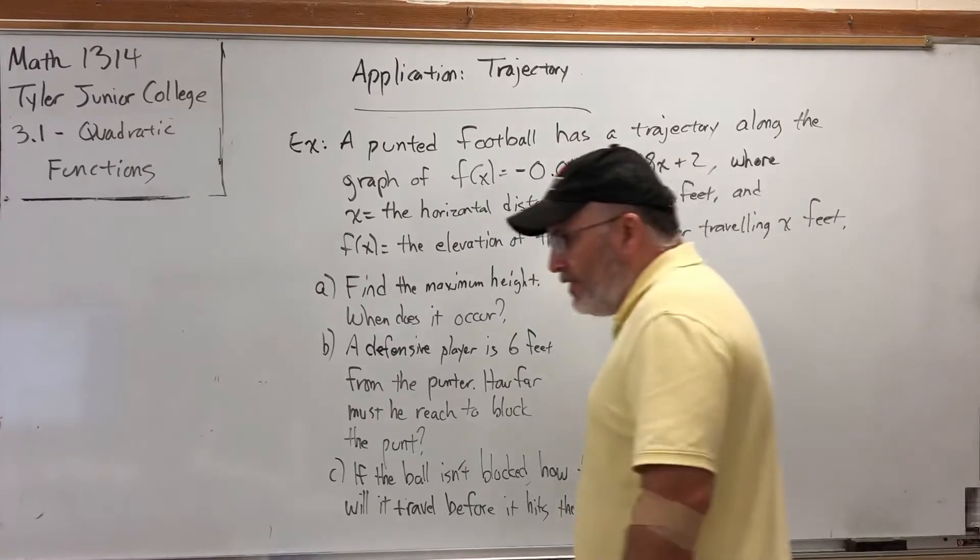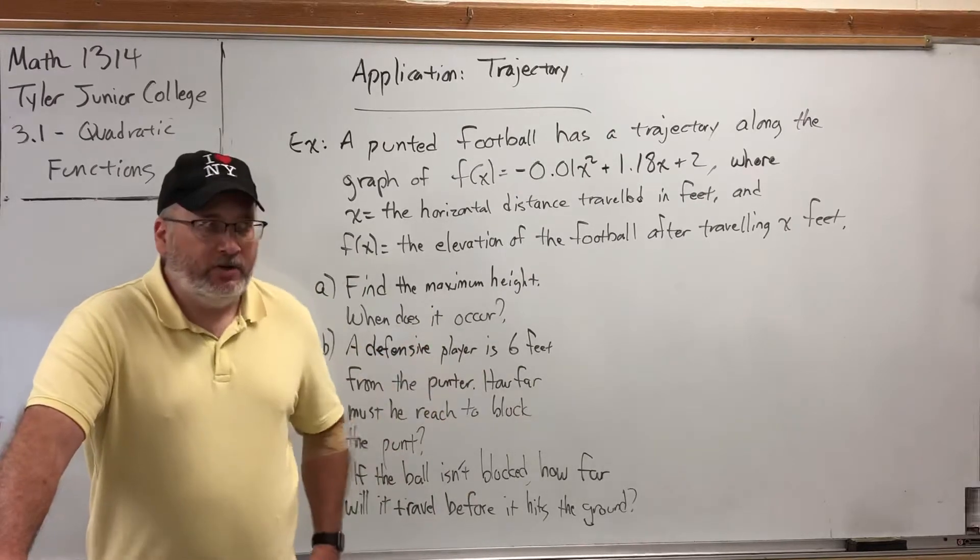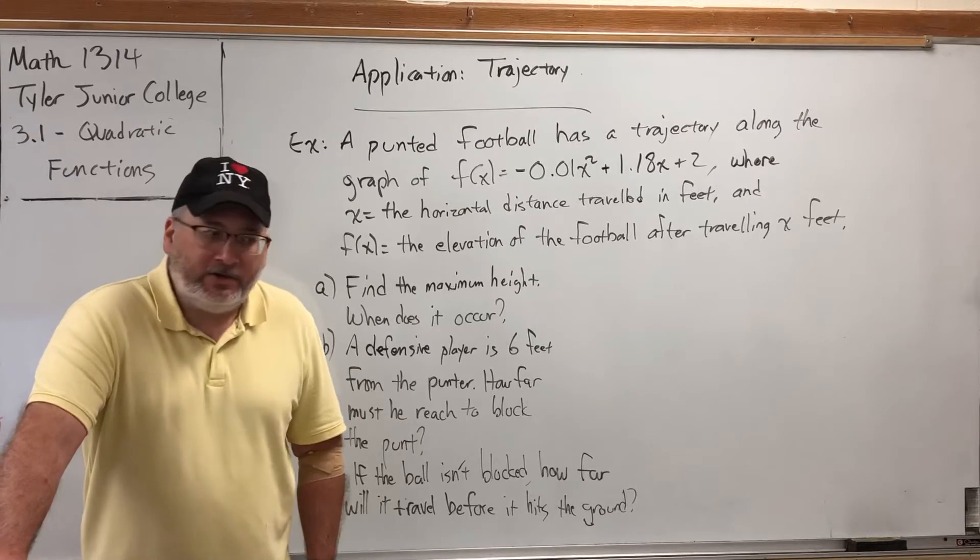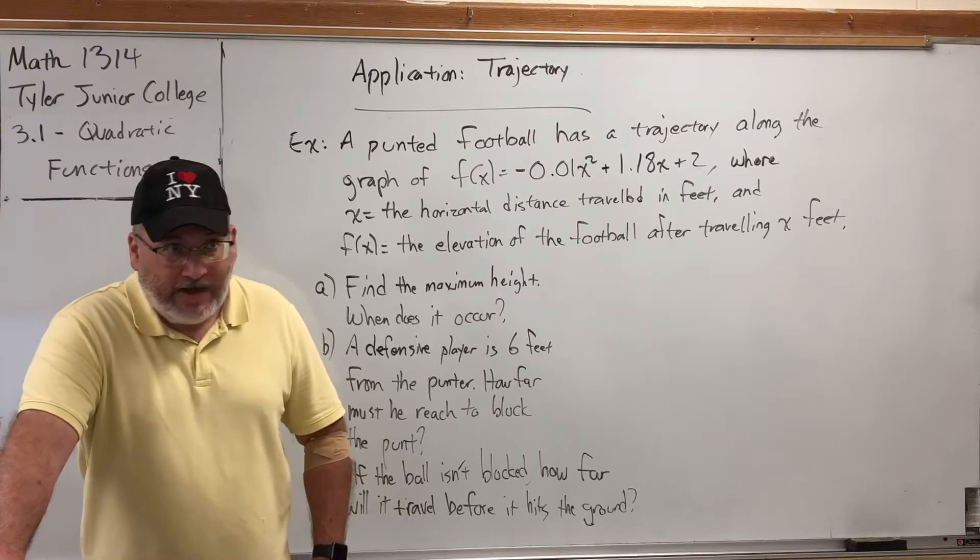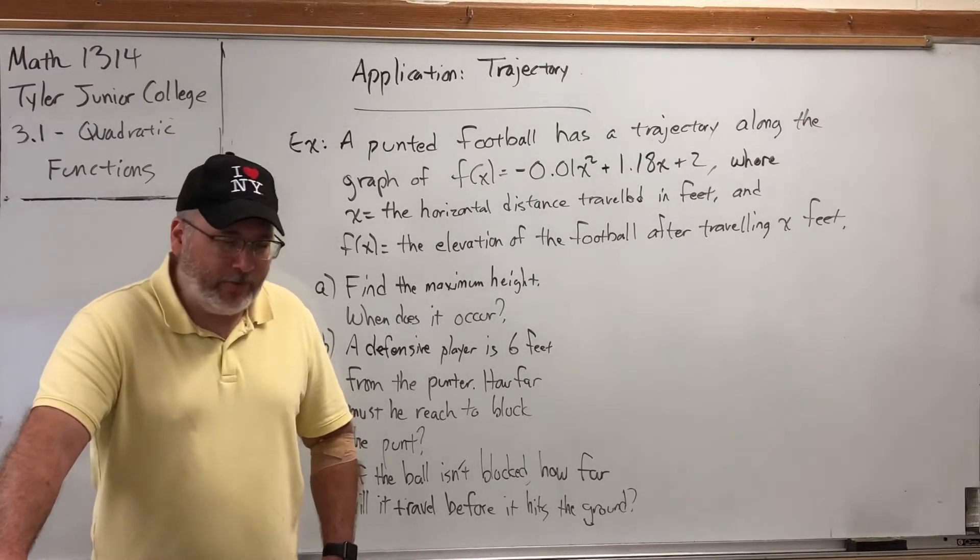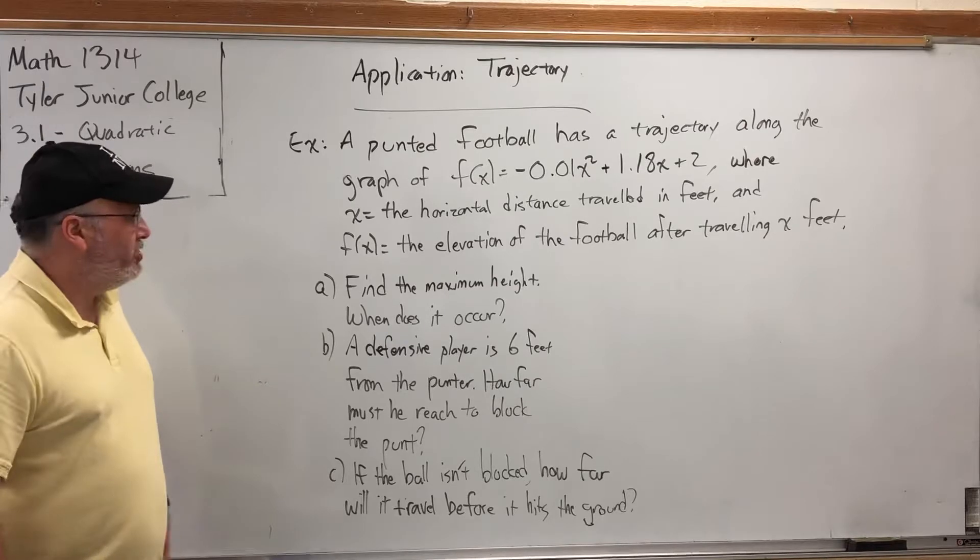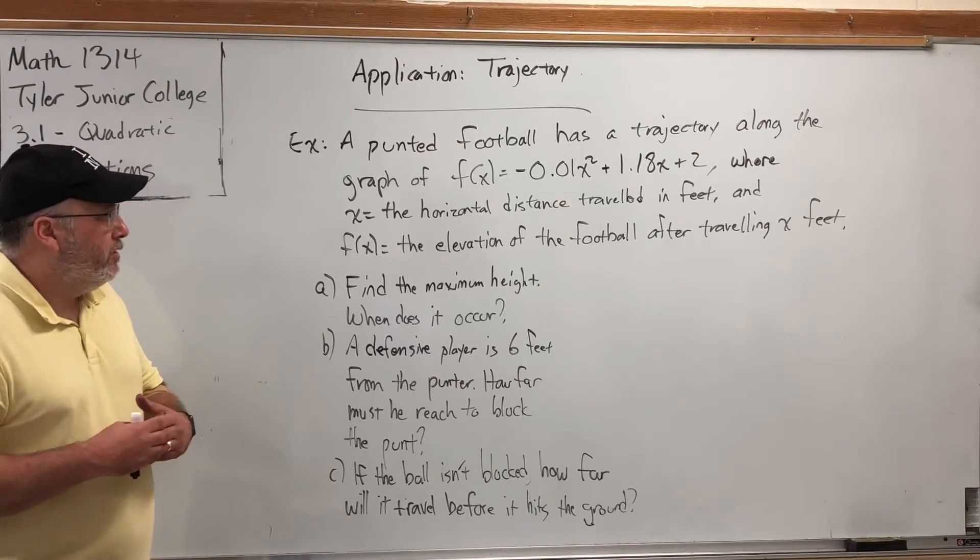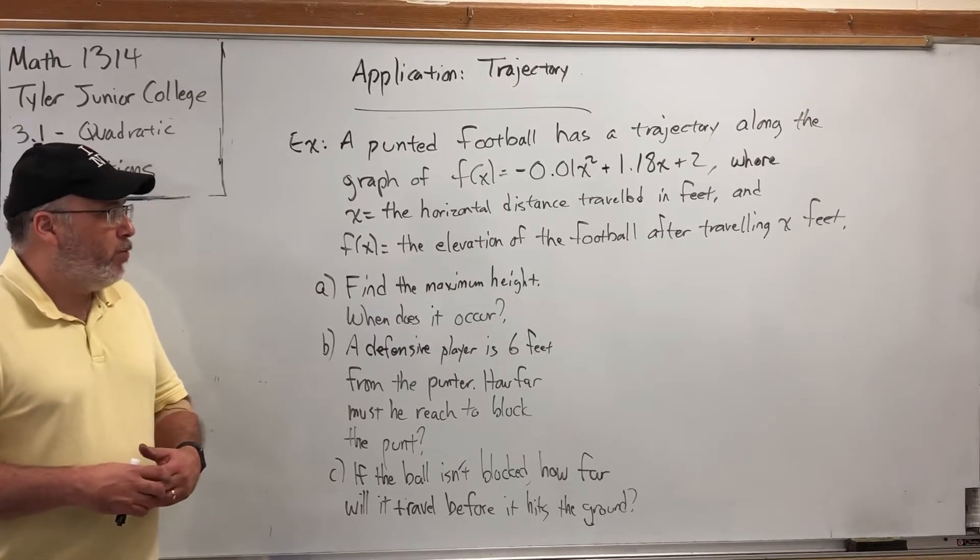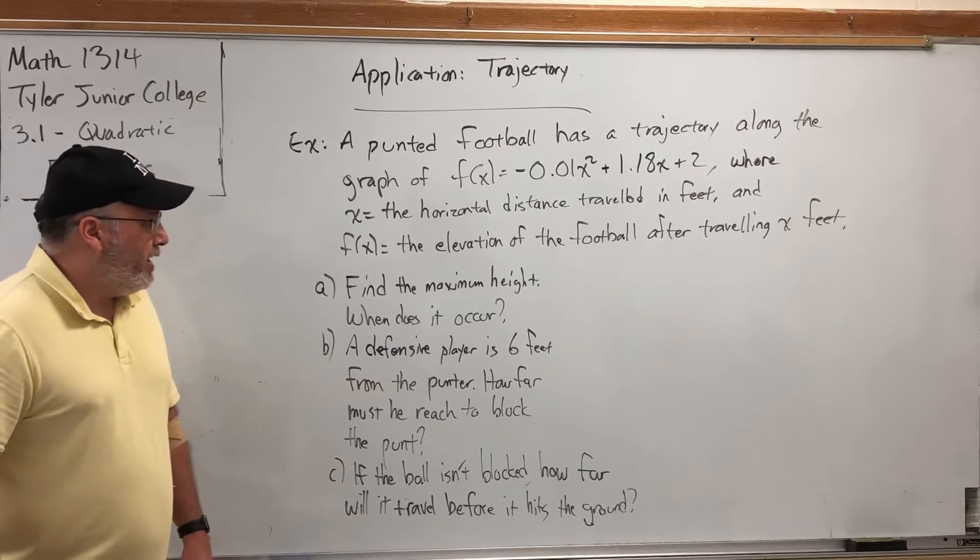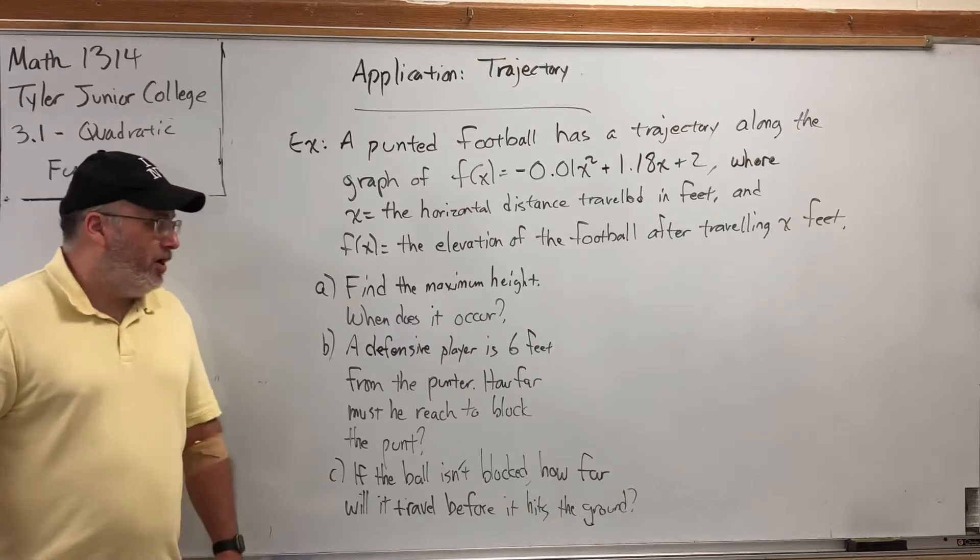Because things that fly through the air follow a parabolic trajectory, there should be an equation that defines the path it follows, and there does exist such a function or equation. Coming up with the equation involves a little bit more than we can do in this class. It involves trigonometry. Actually, that's all it involves is trigonometry, maybe a little bit of vector math. But let's say that we already have the function that defines the path of an object. For example, a punted football has a trajectory along the graph of f(x) = -0.01x² + 1.18x + 2, where x equals the horizontal distance traveled in feet.